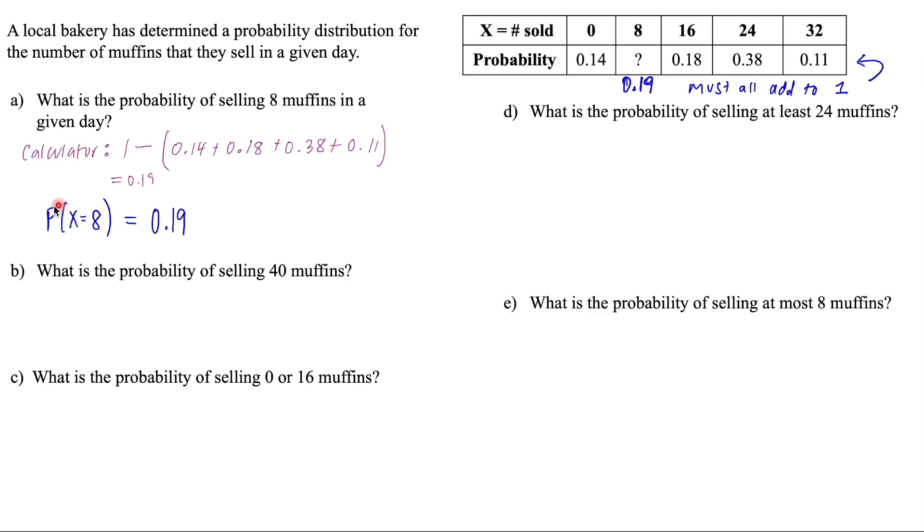So notice the notation here, we are using probability notation. And in this discrete probability chapter, we are denoting with the random variable here X. So we were looking at X equal to eight, so eight muffins. And this is saying exactly eight muffins, no more, no less, is equal to 0.19, because that's the probability value.